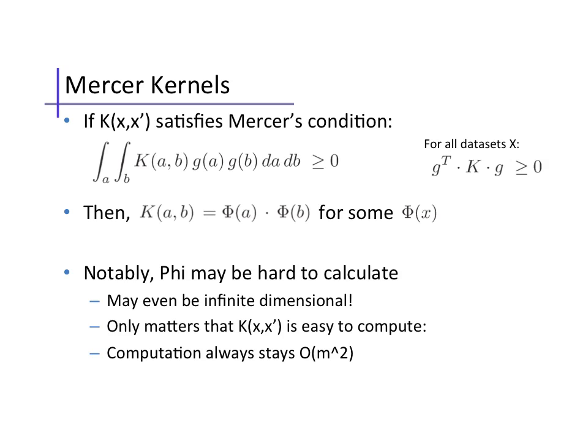For polynomial features, we saw there was a direct correspondence between a particular k, which we showed, and a particular feature vector phi. However, for an arbitrary similarity function k, it may be quite hard to find exactly what feature vector phi corresponds to that k.